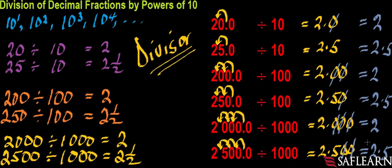Therefore, in summary, to divide a decimal fraction by a power of 10, simply move the decimal point to the left by the number of spaces that is equal to the number of zeros in the multiplier.